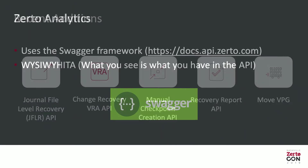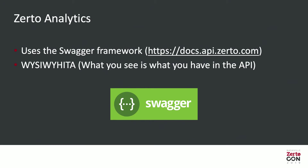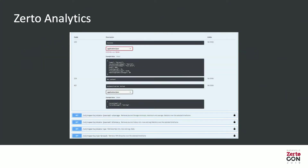Zerto Analytics uses the OpenAPI standard and Swagger. What you see is what you have in the API. You simply go to api.docs.zerto.com and it opens up — you can actually test API calls, see the response, see what's available, and see the parameters you need. It's basically an automatic documentation system: we just update the code and it updates itself, available online straight away.